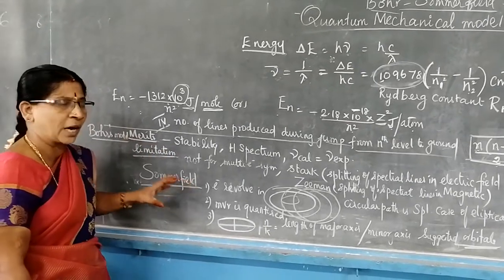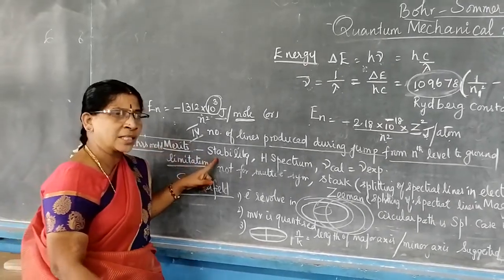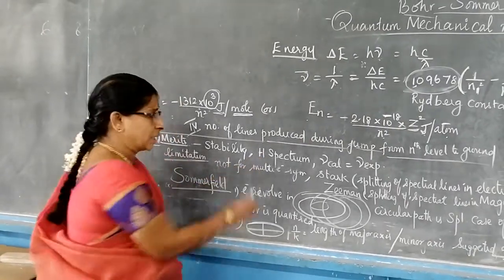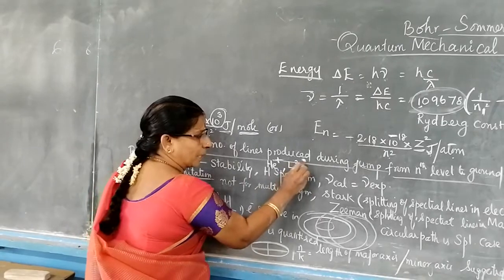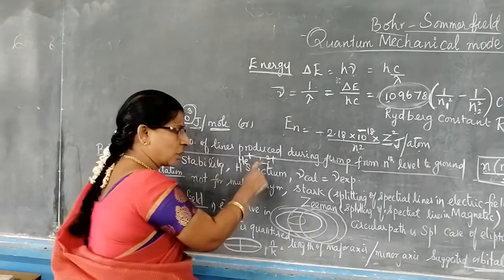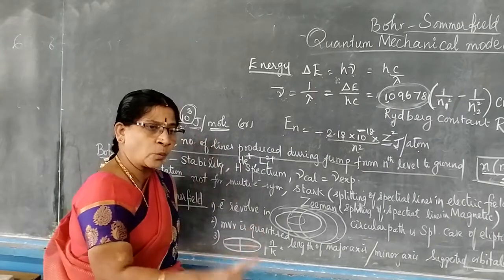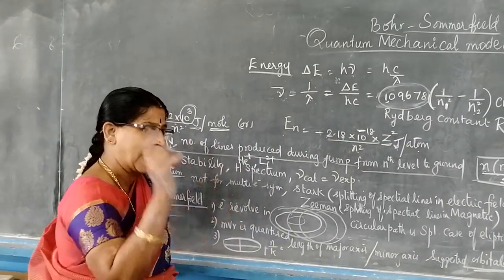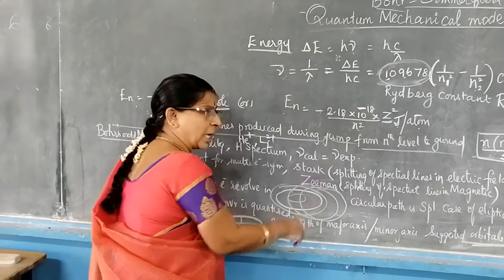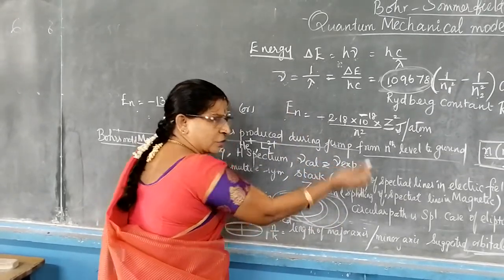We will come to the end of Bohr's model by seeing its merits and demerits. Merits of Bohr's model: it could explain the stability of the atom, which was not explained by Rutherford's model. It was able to explain the hydrogen spectrum — not only hydrogen, but also helium⁺ and lithium²⁺, which are one-electron systems. Lithium has atomic number 3; losing 2 electrons leaves only 1 electron. The calculated frequency values were almost equal to the experimentally found values.